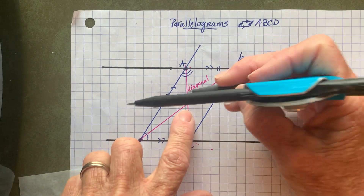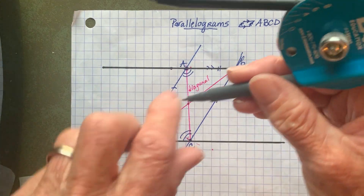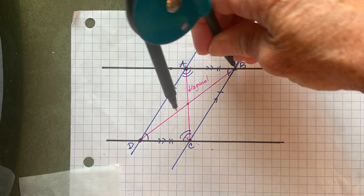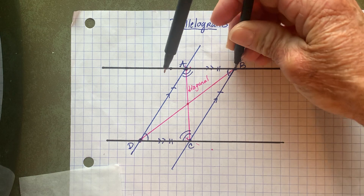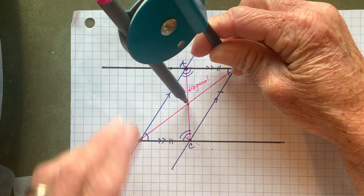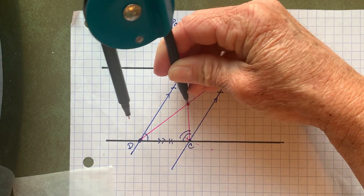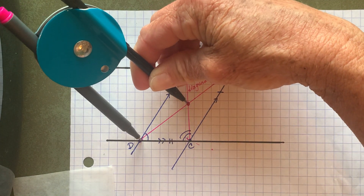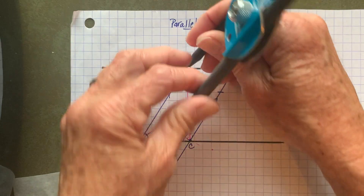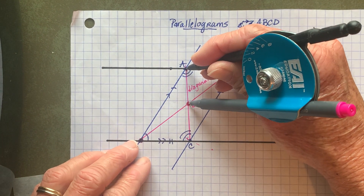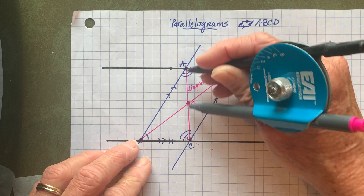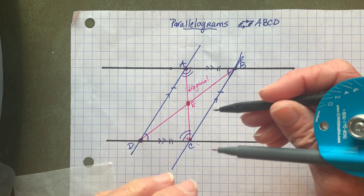Notice that the diagonals intersect each other at this point. Are those diagonals equal in length? BD is a lot longer than AC, so they're not equal to one another. However, if I measure from B to this intersection point, I can see it's the same distance down to D. Let's call that E. And when I measure from A to E on the other diagonal, I can see it's the same distance from point E to point C. So these diagonals bisect one another.